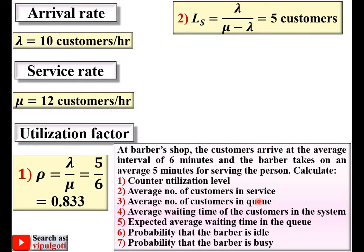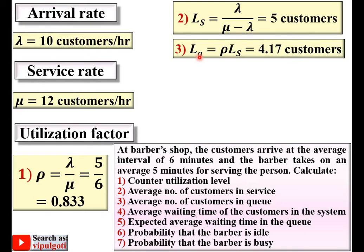Third, the average number of customers in the queue, denoted LQ. The formula is LQ = rho × LS. Substituting rho = 0.833 and LS = 5 gives LQ = 4.167.